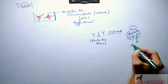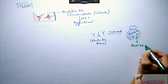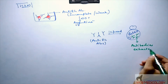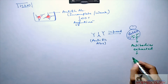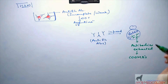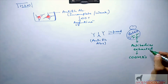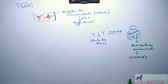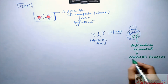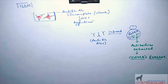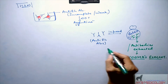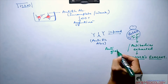These antibodies are extracted and this is our Coombs reagent. Coombs reagent is a solution which possesses antibodies against the anti-Rh antibodies. These antibodies are also known as anti-globulins.